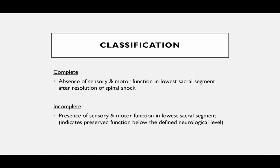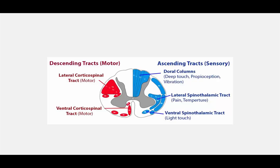A complete spinal cord injury is defined as absence of sensory and motor function at the lowest sacral segment after resolution of spinal shock. An incomplete injury — like anterior cord syndrome or central cord syndrome — is indicated by the presence of some sensory and motor function in the lowest sacral segment, meaning some preserved function below the neurologic level of injury.